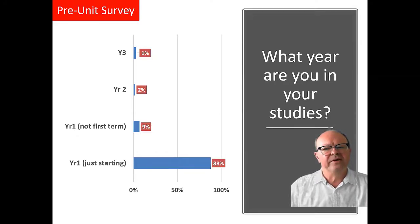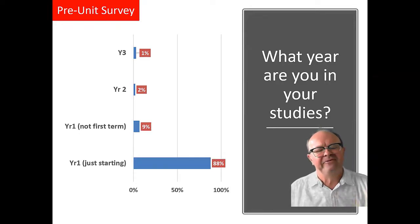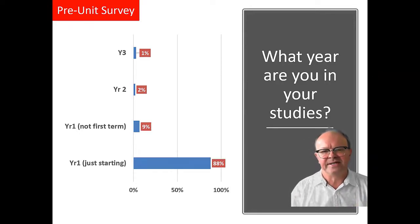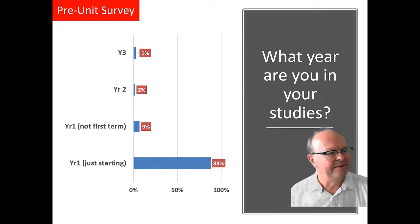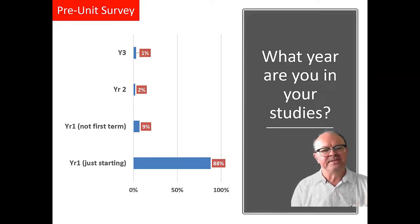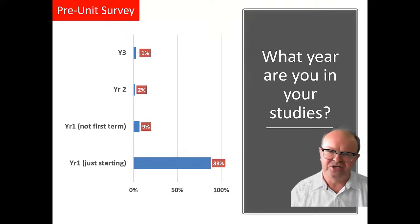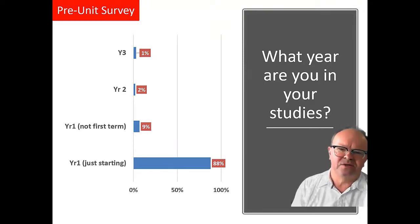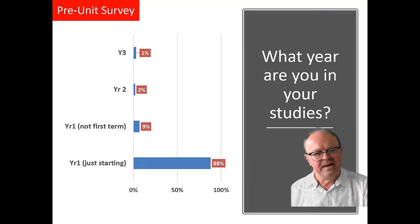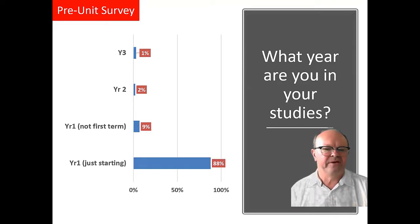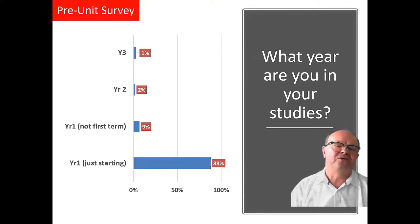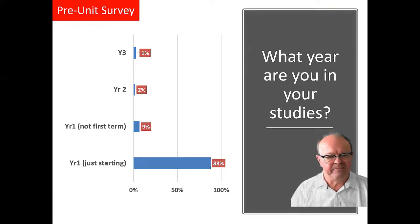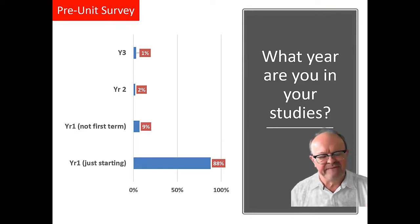Another pre-unit survey question: what year are you in your studies? 88% of people in our unit are in first term, first year — just starting out, so if you're like that, you're not alone. 9% are in first year but not the first term — they've started first year and done some units in a previous term. There's 2% in year two, and 1% are in year three or more. So the great bulk of people are in first year, first term.